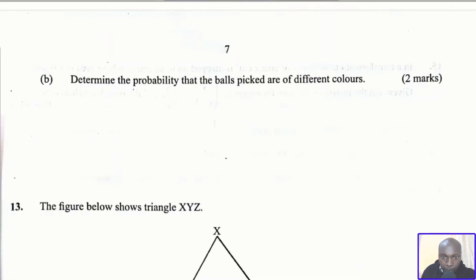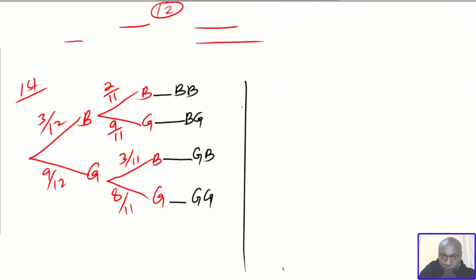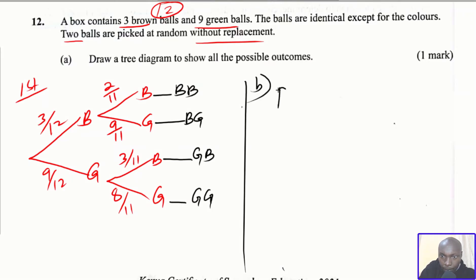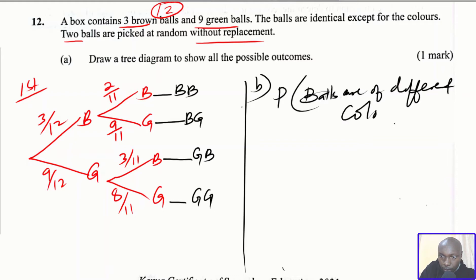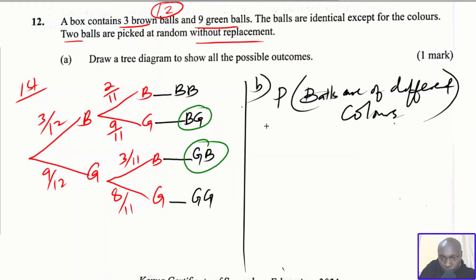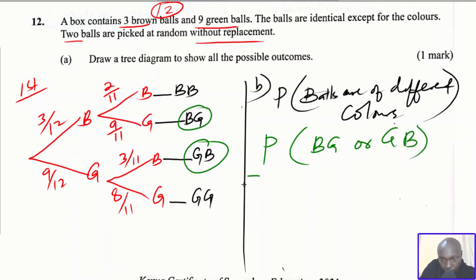For part B: determine the probability that the balls picked are of different colors. Different colors means brown and green or green and brown. We go to the tree diagram and identify the branches where the balls are of different colors — that is brown-green and green-brown. So the probability equals P(brown and green) or P(green and brown).